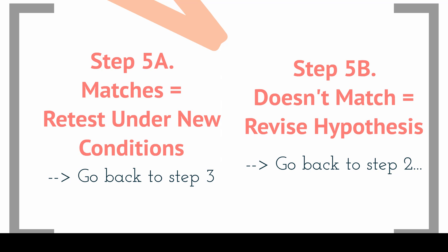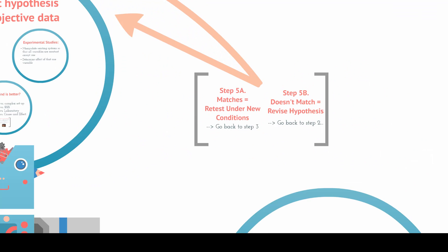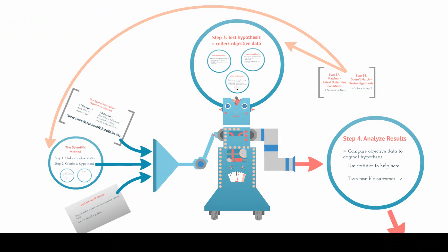Either one of these outcomes is part of the scientific method. Looking at how that works: we've got our data coming in and we're analyzing our results. If it matches, you're going to go back and run additional tests. If it doesn't match, you're going to go back, revise your hypothesis, and go through these steps again.